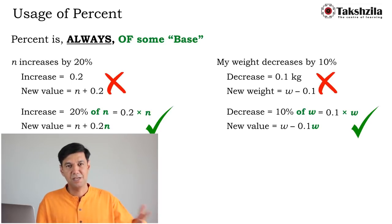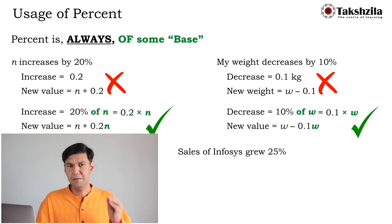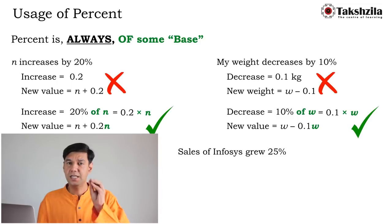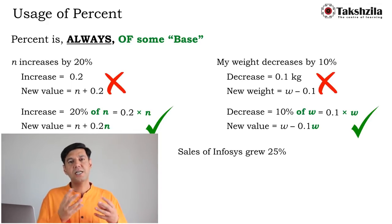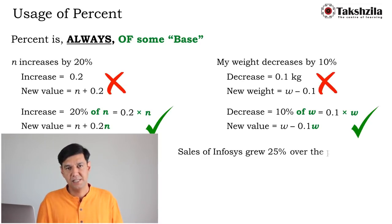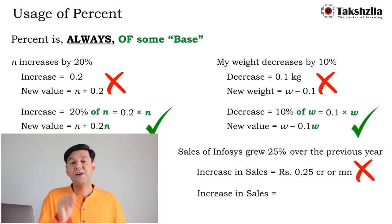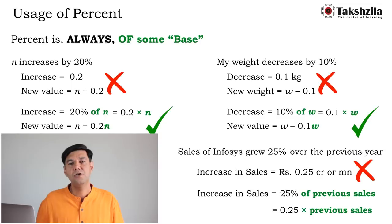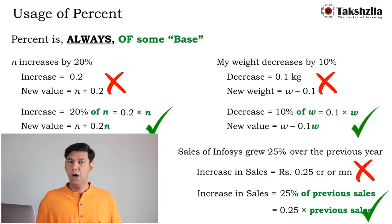From data interpretation: 'Sales of Infosys grew by 25%.' This does not mean sales grew by 0.25 crore — if that were the case, they would have written 0.25 crore. Here, 25% is compared to something: the previous year's sales. So the increase in sales is 0.25 times the previous year's sales, not an absolute 0.25.